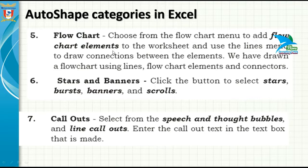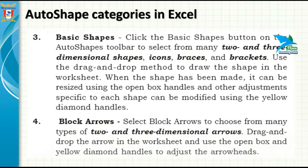Flowchart: choose from the flowchart menu to add flowchart elements. A flowchart contains box and oval shapes for starting and stopping a process, a diamond shape for decision making, and connector arrows to connect all the elements. If you want to draw a flowchart, you can use this category.